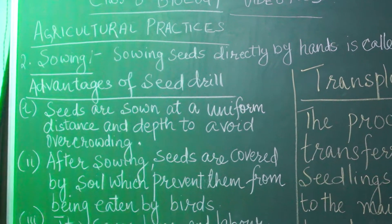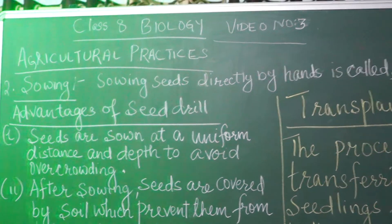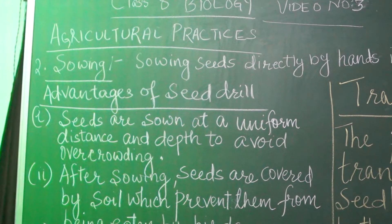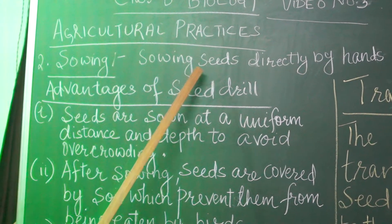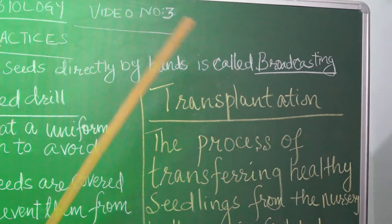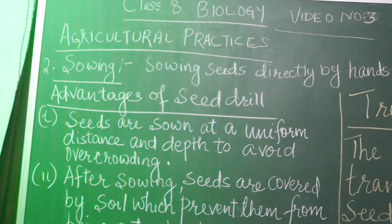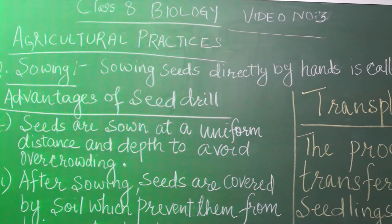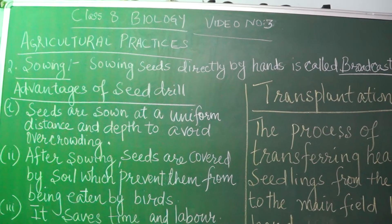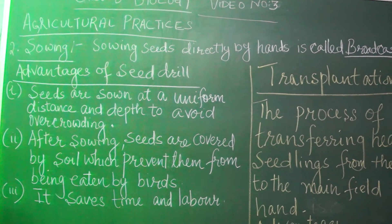Now, how can these seeds be sown? Seeds can be sown in the fields either by hand or by using tools. The method of sowing seeds directly by hand is called broadcasting. In this method, the seeds are taken in the hand and gradually scattered across the entire ploughed field.